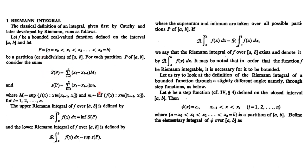Similarly, among all lower sums with respect to the partition, the maximum value is the most appropriate approximation of the area under the curve. In this way, we obtain the upper Riemann integral and lower Riemann integral. A function is Riemann integrable over [a,b] if both these values exist and are equal, denoted simply as the integral of f over [a,b].